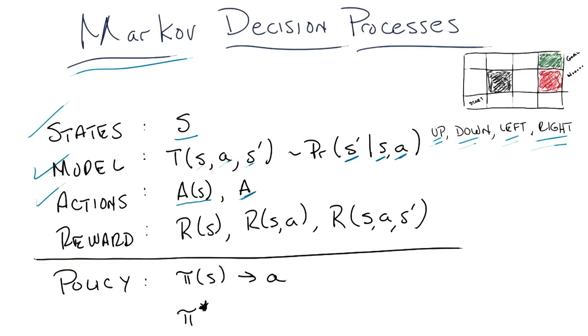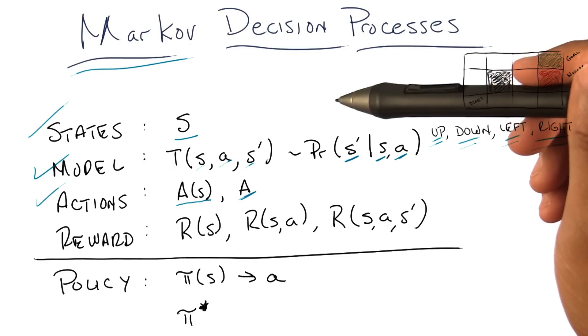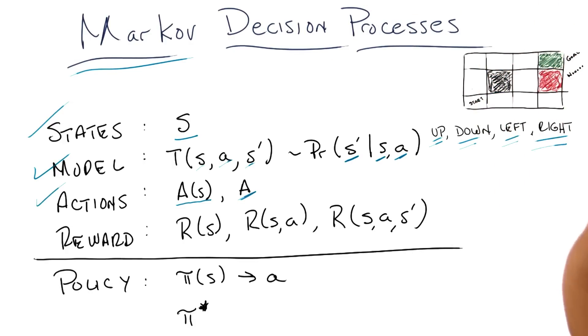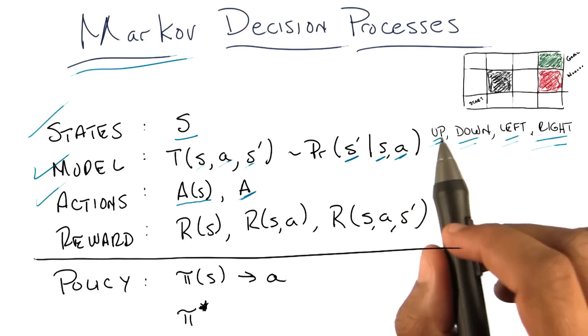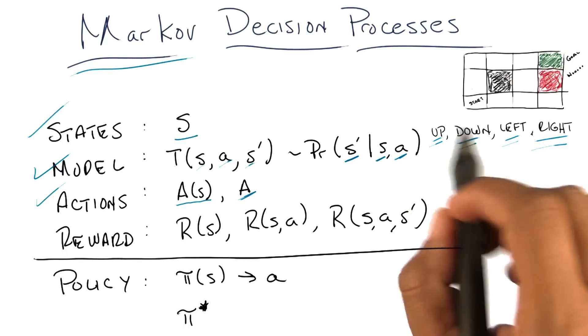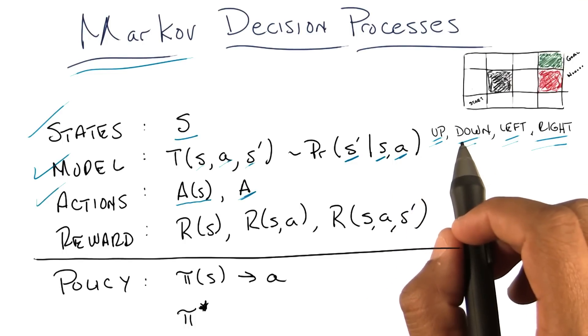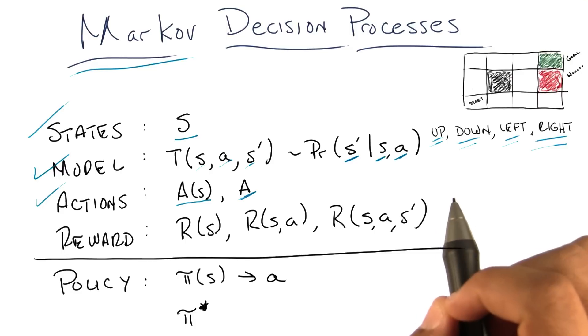So, the model really is an important thing. And the reason it's important is it really does describe the rules of the game. It tells you what will happen if you do something in a particular place. It captures everything that you know about the transition of the world, what you know about the rules.